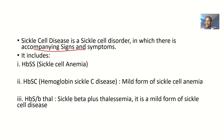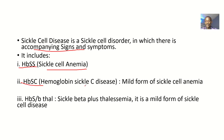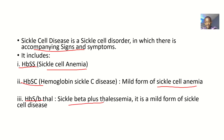Sickle cell disease is like a parent umbrella to sickle cell anemia. The types of sickle cell disease include hemoglobin SS — that's sickle cell anemia — and hemoglobin SC, which is hemoglobin sickle C disease, a mild form of sickle cell anemia. Then we have hemoglobin S beta-thalassemia, which is sickle beta-plus thalassemia, another mild form of sickle cell disease.